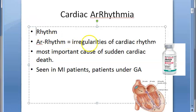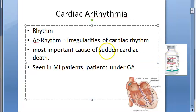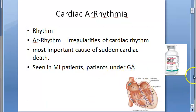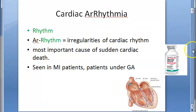The heart has a rhythm called cardiac rhythm — the rate at which it works. When this rhythm becomes irregular, it becomes arrhythmia. Arrhythmia is the most important cause of sudden cardiac death, seen in MI patients, patients under general anesthesia, etc. Today we will look at the pharmacology of anti-arrhythmic drugs.